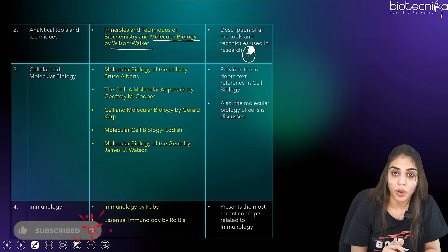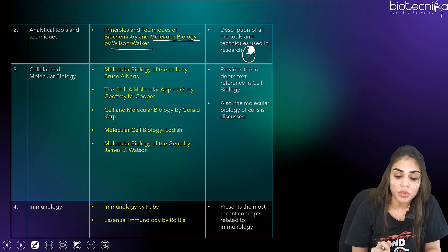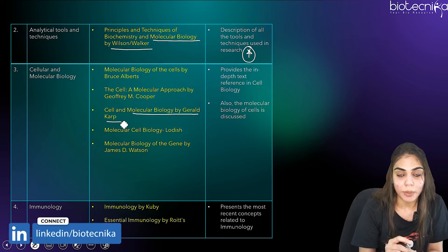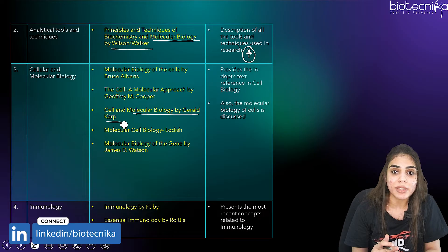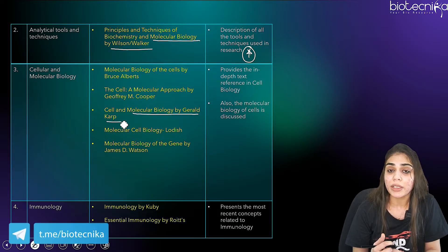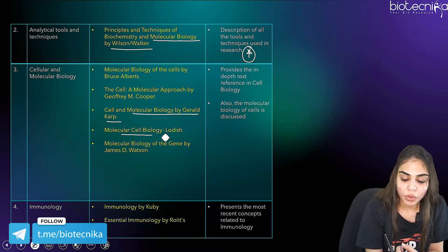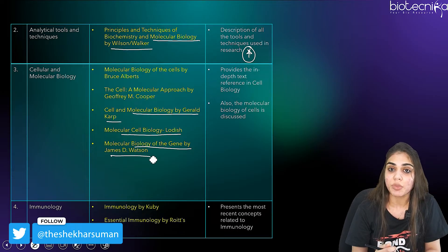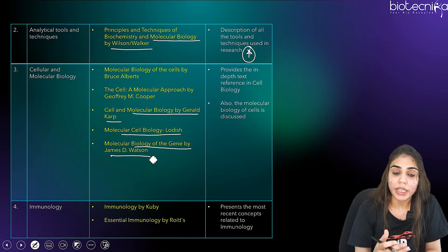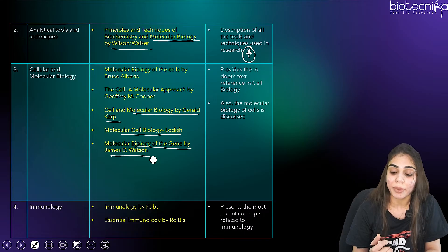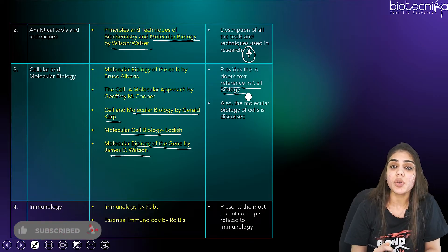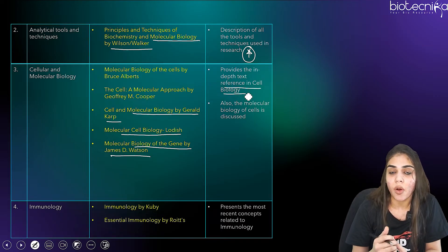For cellular and molecular biology, the third section under biochemistry, you can go for Molecular Biology of the Cell by Bruce Alberts, the Cooper book, or Cell and Molecular Biology by Gerald Karp. If you want to start with basics and understand everything, it's better to go for Gerald Karp. You can also refer Molecular Cell Biology by Lodish or Molecular Biology of the Gene by James D. Watson. These books provide in-depth reference in cellular biology and molecular biology.